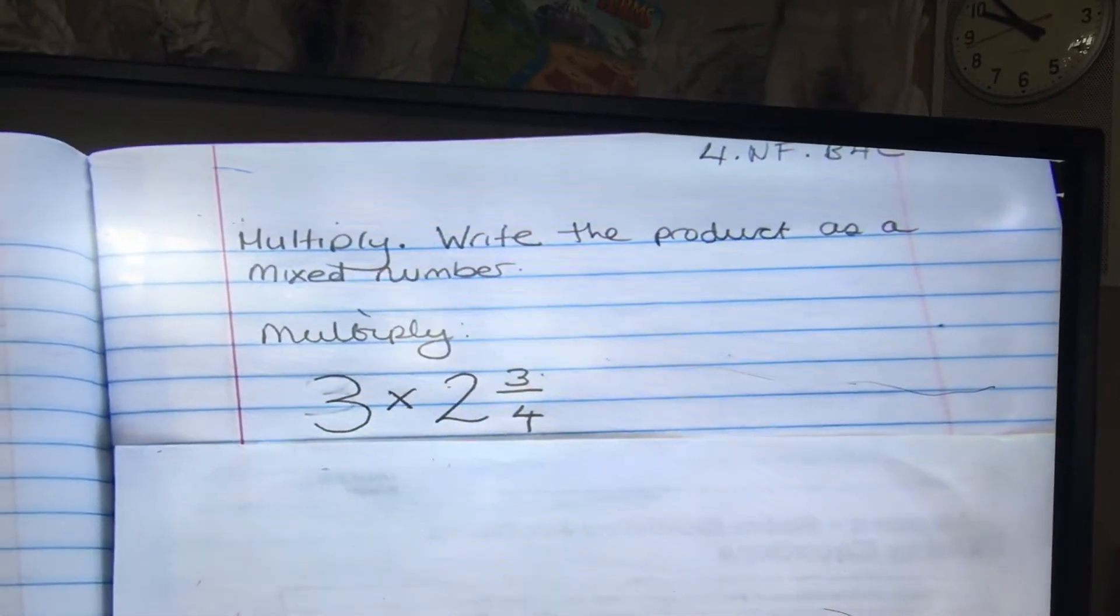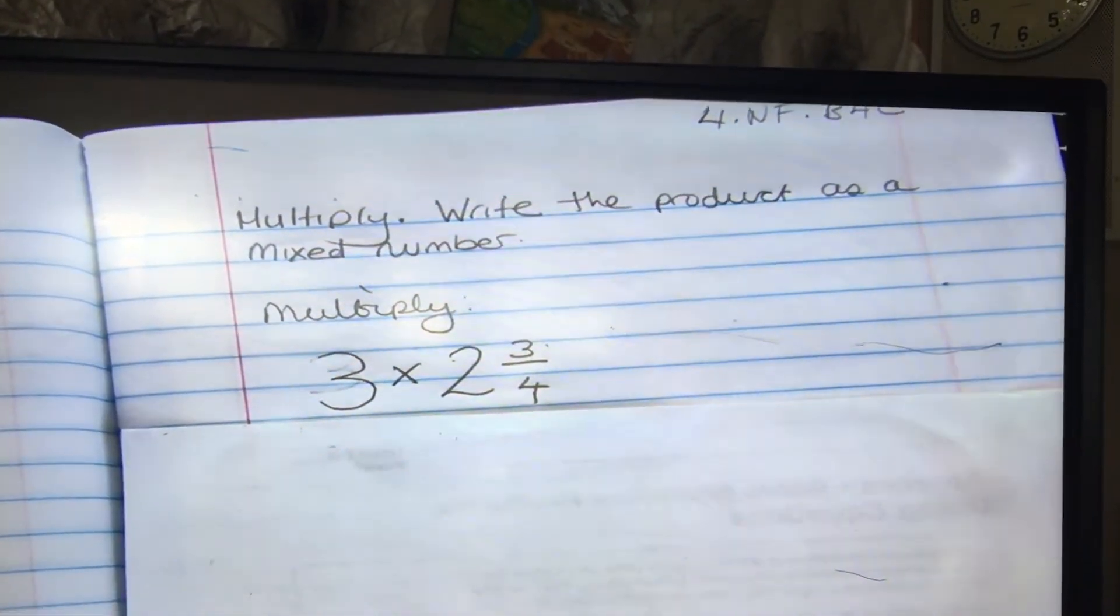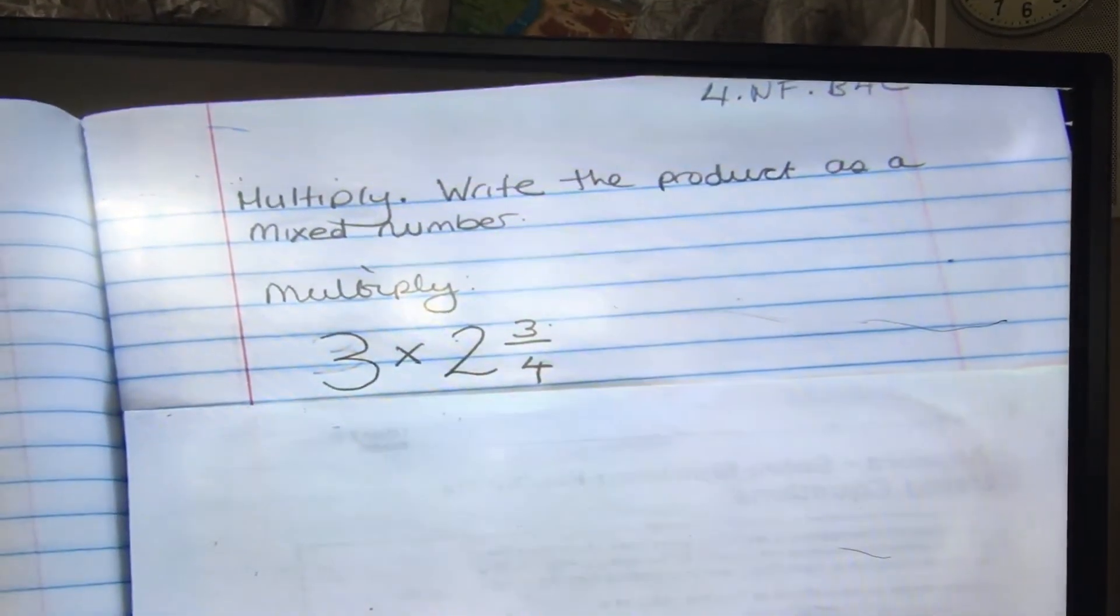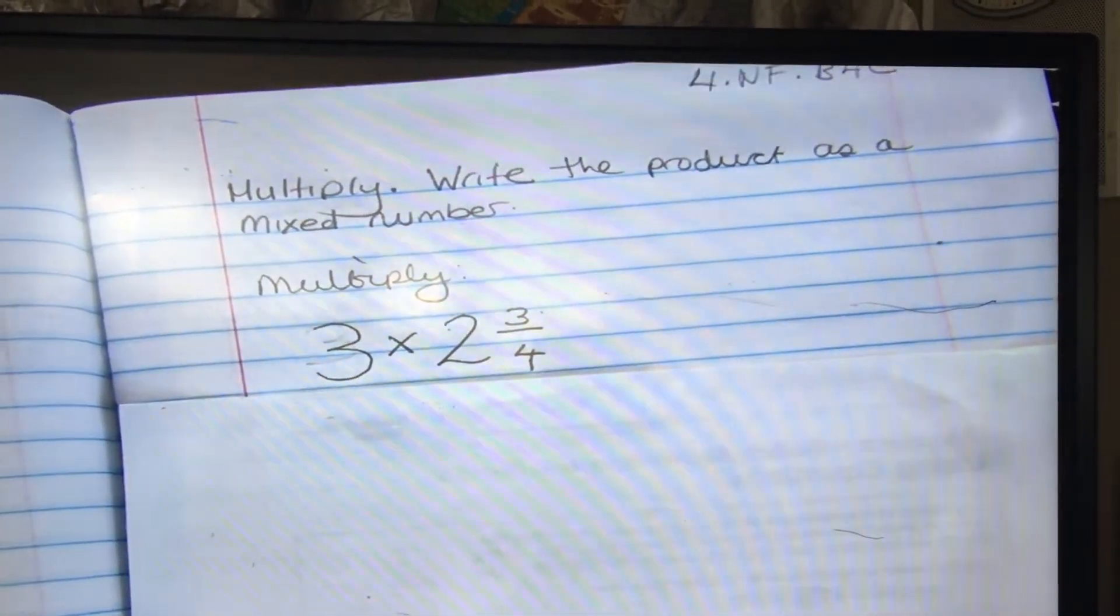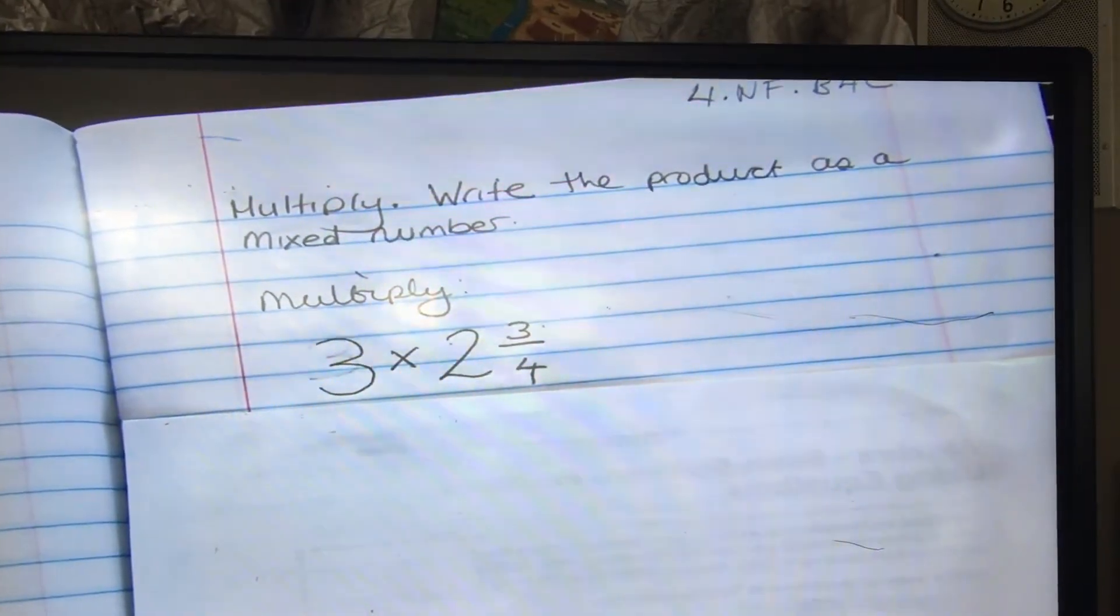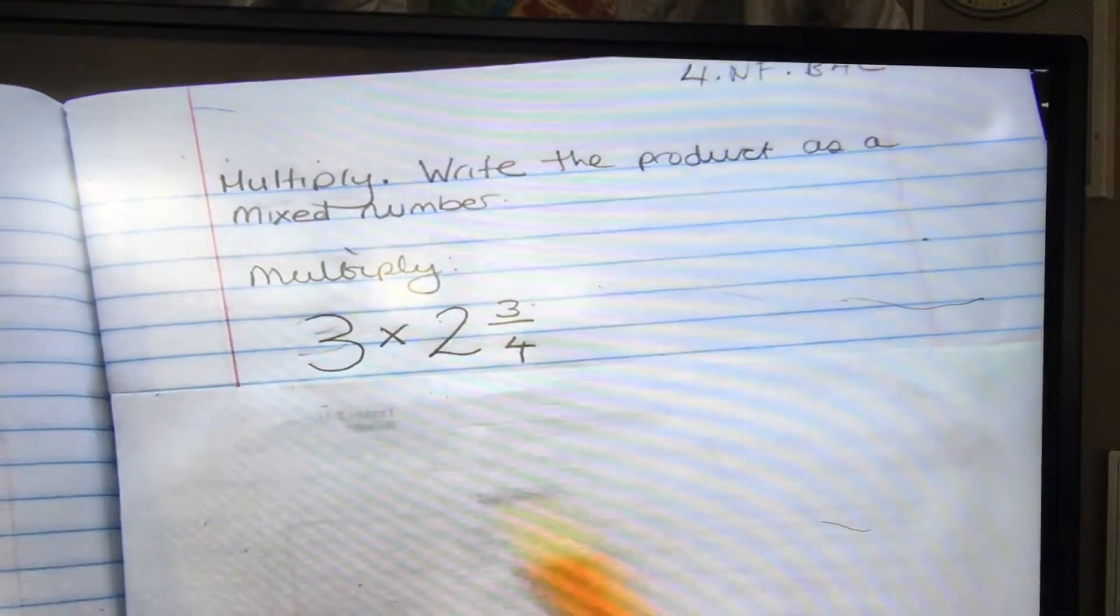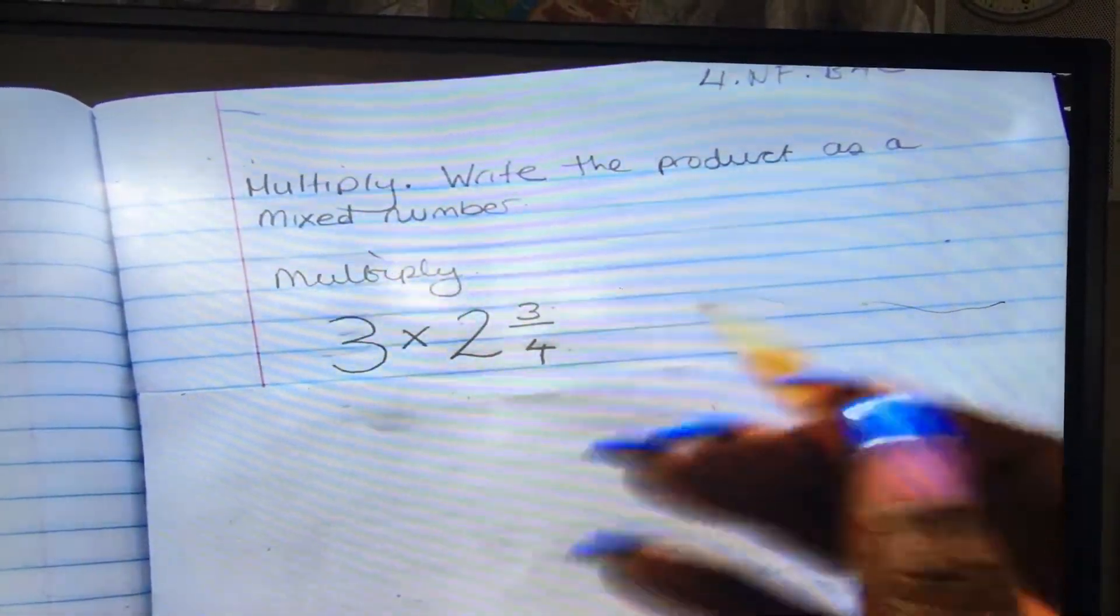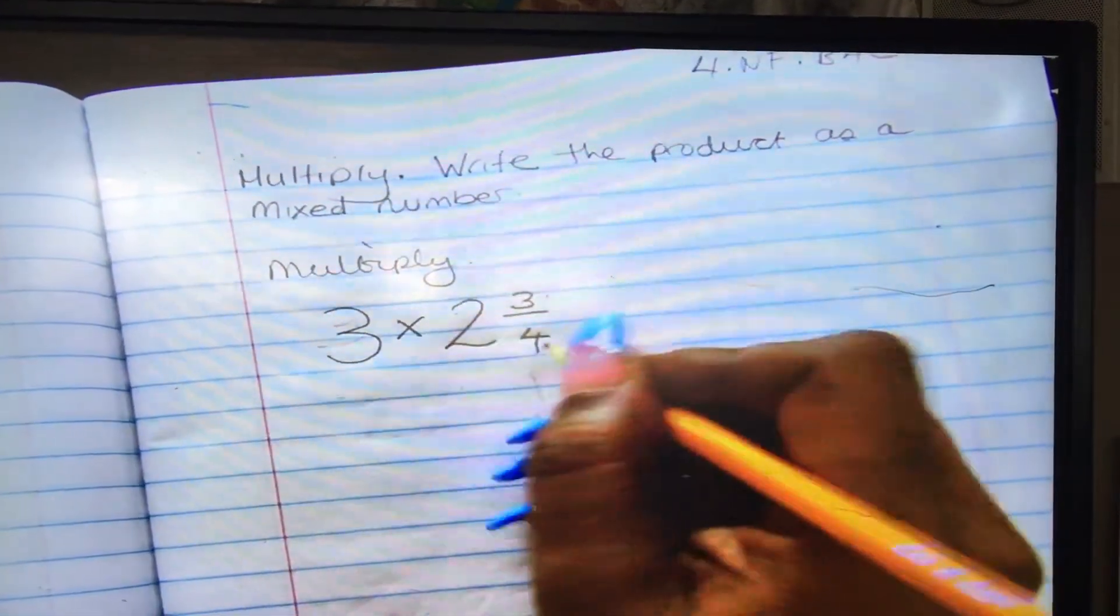Good morning fourth grade. Today we will be doing standard NF.4C, that is we're going to multiply these fractions and write the product as a mixed number. Alright, so pay attention here. We've got 3 times 2 and 3/4. The first thing we're going to do is change this mixed number into an improper fraction.